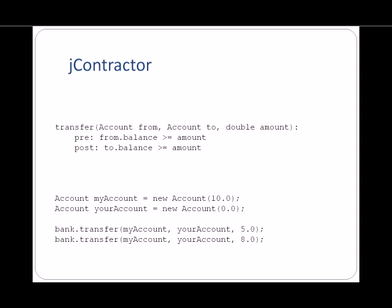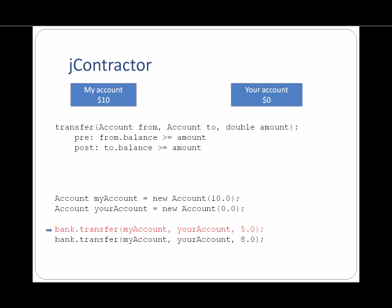Let's look at how contracts work in our bank account example. Suppose we create two account objects, one with a balance of $10 and the other with a balance of $0. When we attempt to transfer $5 from my account to your account, JContractor will first check the precondition. The precondition passes because the account has enough money to satisfy the transfer. After transferring the funds, JContractor checks the postcondition. Your account now contains $5, so the postcondition passes.